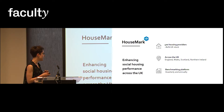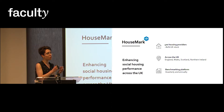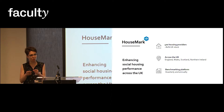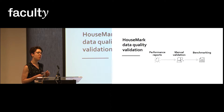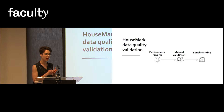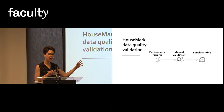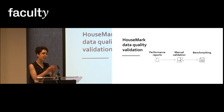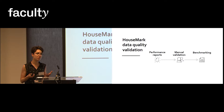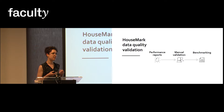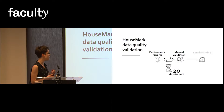A key step in this benchmarking is to ensure the quality of the data that goes into it. At Housemarque, that's handled by a dedicated team of validators who manually review every single performance report submitted. If inconsistencies appear, they get back in touch with the clients — the housing providers — and try to resolve these issues. But when you are dealing with hundreds of organizations, this step can be very time-consuming.